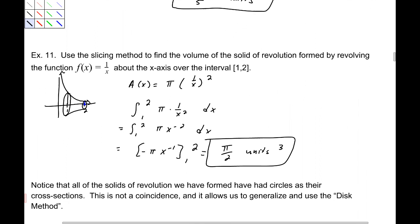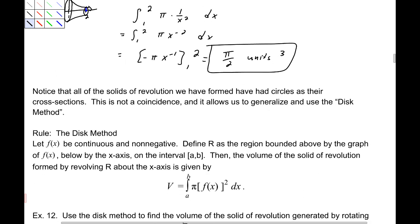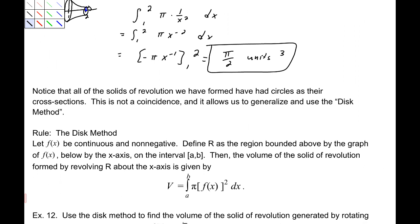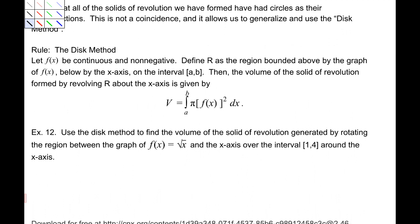All of these solids of revolution had circles as their cross-sections — this isn't a coincidence. We generalize this as the disk method. If f(x) is continuous and non-negative, and R is the region bounded above by f(x) and below by the x-axis on the interval a to b, then the volume of the solid formed by revolving R about the x-axis is V = ∫ from a to b of π·[f(x)]² dx. That's actually why this chapter is called applications of integrals.